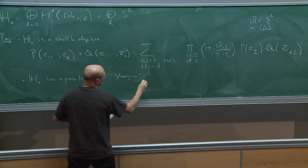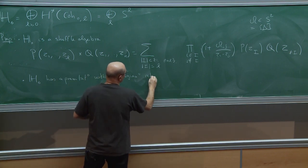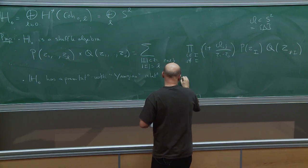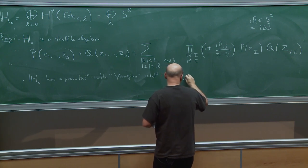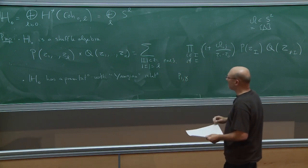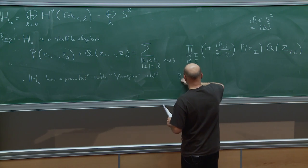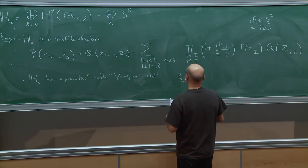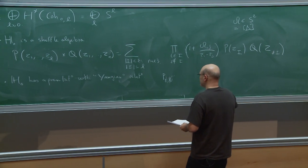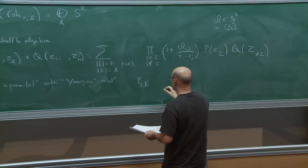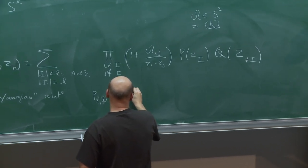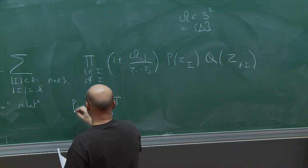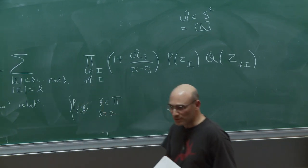Indeed, H_0 has a presentation as a Yangian — with Yangian relations. It is generated by P_{γ,L} for γ in π and L ≥ 0, satisfying some relations. This is somehow the rank-zero part — the cohomological Hecke algebra.